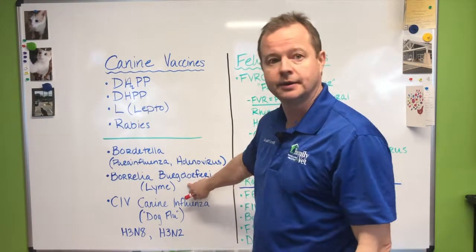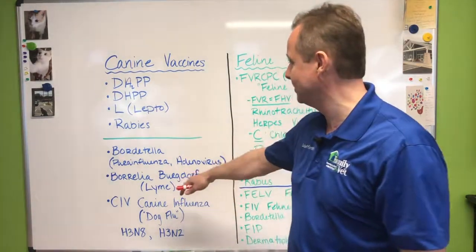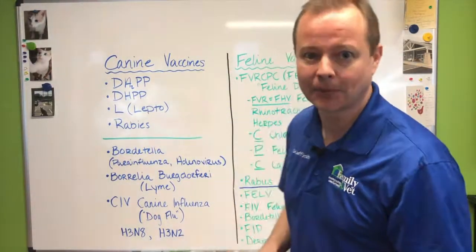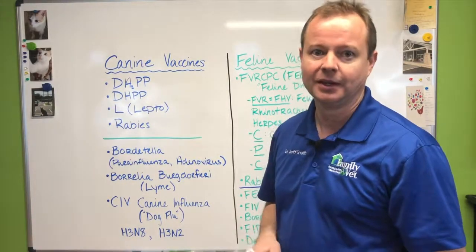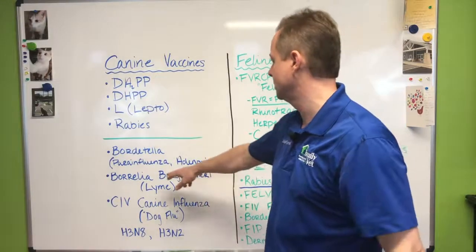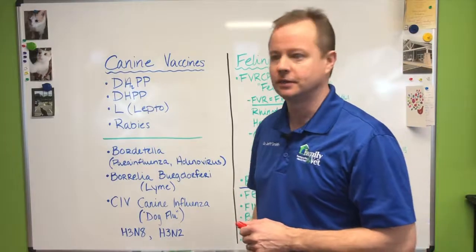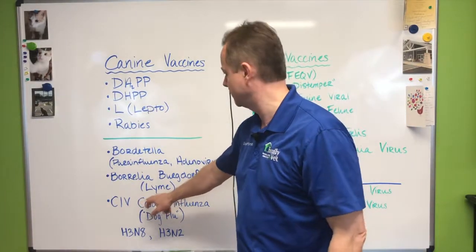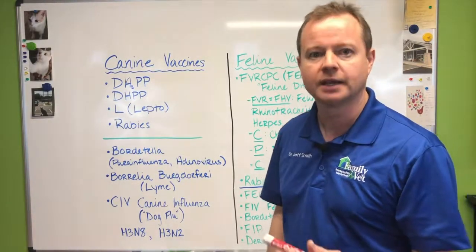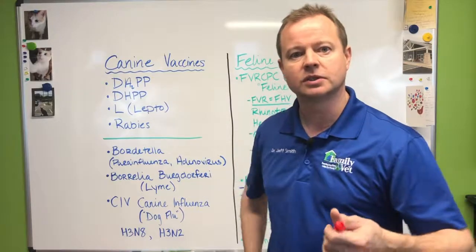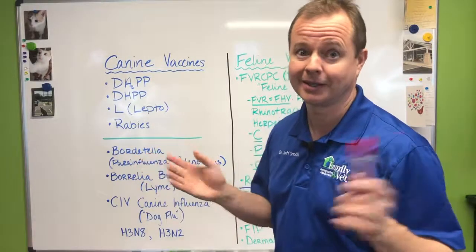Borrelia burgdorferi is the causative agent of Lyme disease — we call it Lyme because Borrelia burgdorferi is quite a mouthful. It may also be known as canine borreliosis, so if you're searching online, you might find more information searching under Borrelia than under Lyme disease. Lyme is actually a term from Lyme, Connecticut, where the disease was first discovered — originally in humans. If you Google it, you'll get a lot of human medical literature, which is fine too.